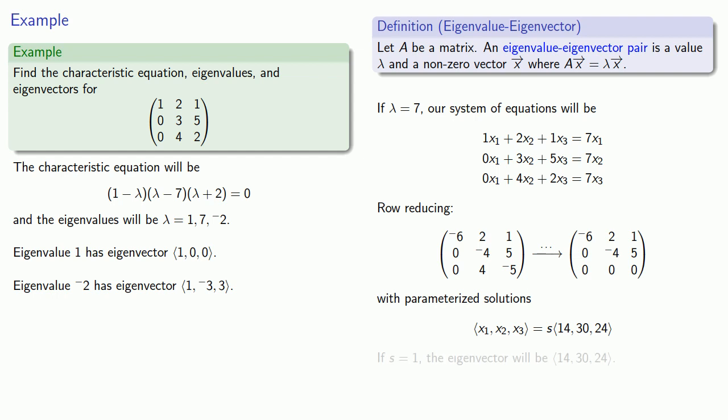Again, we'll let s equal 1 to get one of the many eigenvectors: (14, 30, 24). And so now we have our characteristic equation, our eigenvalues, and all of our eigenvectors.